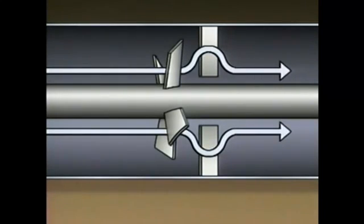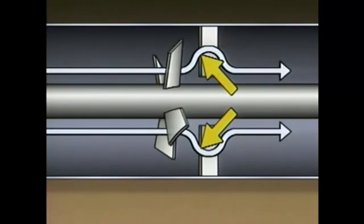When the gas contacts the stationary blades, they cause the gas to change direction as it flows toward the compressor's discharge. This causes the gas to slow down. As the gas slows down, its pressure increases. Two kinds of centrifugal compressors are single-stage compressors and multi-stage compressors.